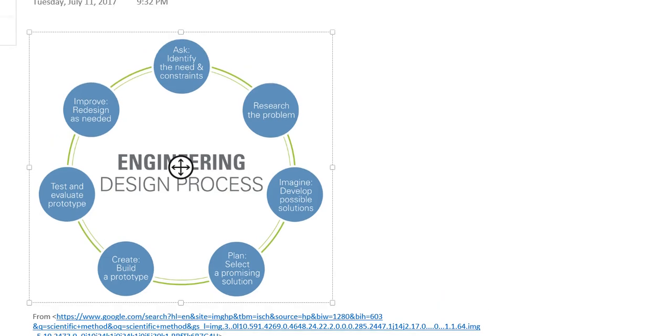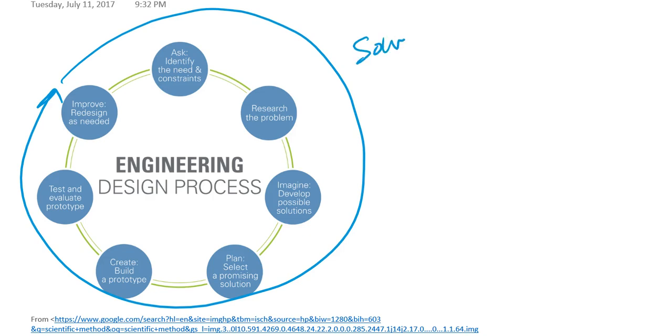So, for example, right here we have a copy of the engineering design process here. Once again, notice it is a cycle. Basically, it isn't necessarily a straight line. We can and often do repeat steps, proceed backwards or forwards as the needs of the project dictate. But here the important thing about the engineering design process is it's used to solve a specific problem.